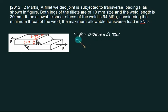This is 2 times 0.707, T is 10, L is 30mm squared, tau allowable is 94 N/mm². The answer is 39.87 kilonewtons.